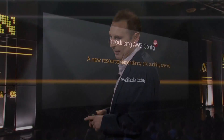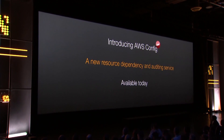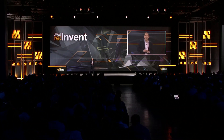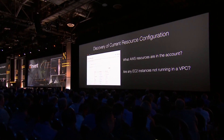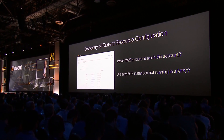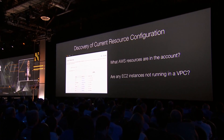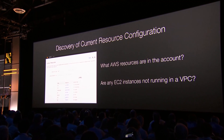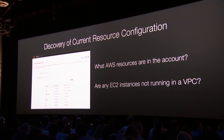We're introducing today a service in preview called AWS Config, which is a new resource dependency and auditing service. What this service allows you to do is it lets you have full visibility into all the resources you have in AWS. So if somebody says, tell me everything you're running in AWS, you can answer that question. If somebody says, do we have any resources that aren't running in a VPC, an Amazon Virtual Private Cloud? You can answer that question.